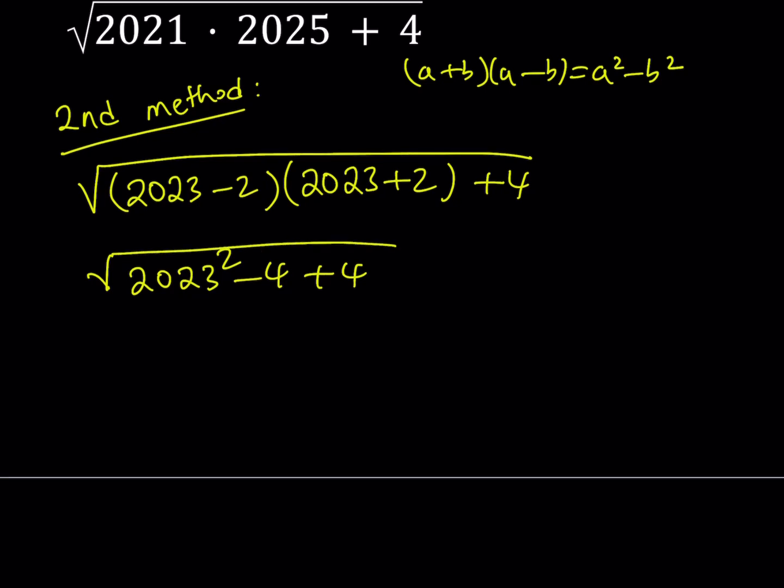And now we have a plus 4 on the outside. The negative 4 and the positive 4 cancel out and we end up with the square root of 2023 squared which is equivalent to 2023 because 2023 is positive. The absolute value is going to give us the positive value. Okay great.